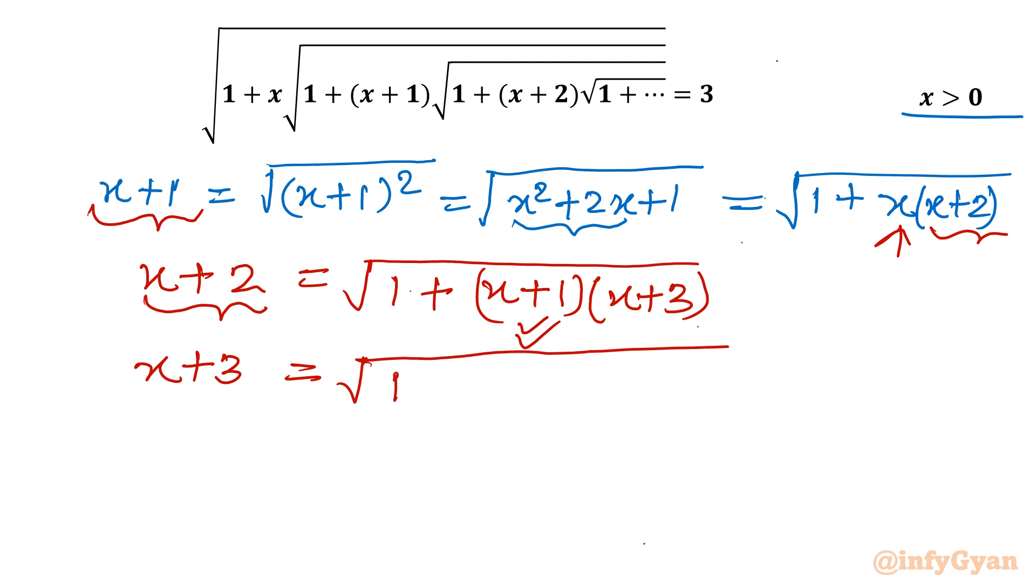x plus 3 - how I can write? 1 plus one number smaller, so x plus 2, one number bigger, x plus 4. For x plus 4, that value I will consider: 1 plus x plus 3 and x plus 5.